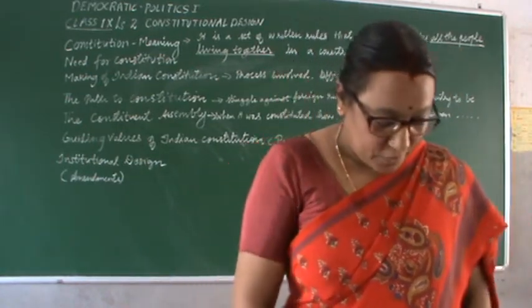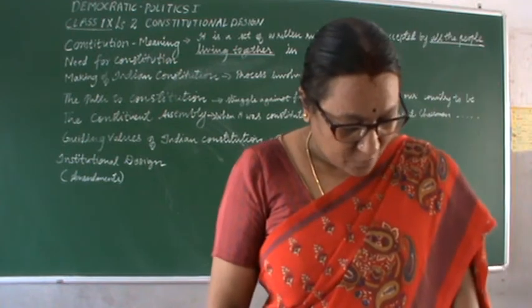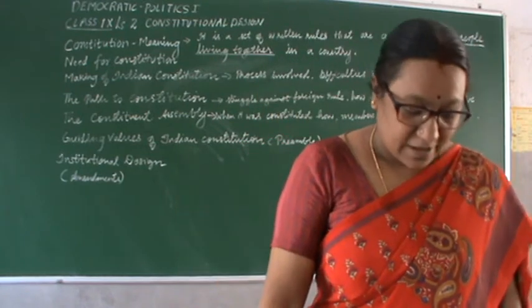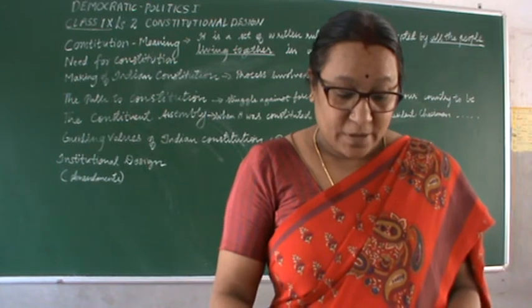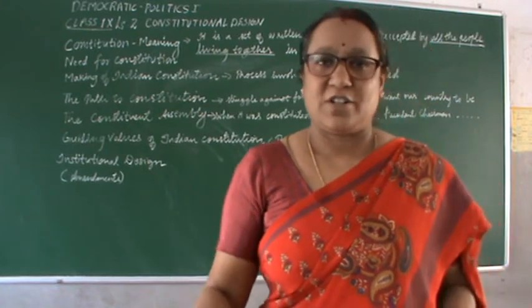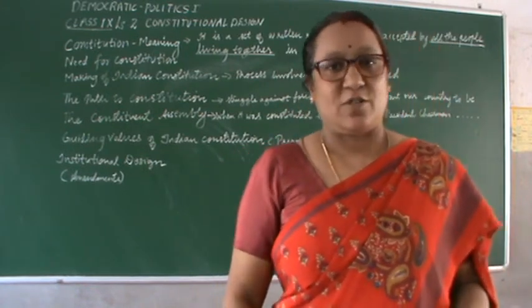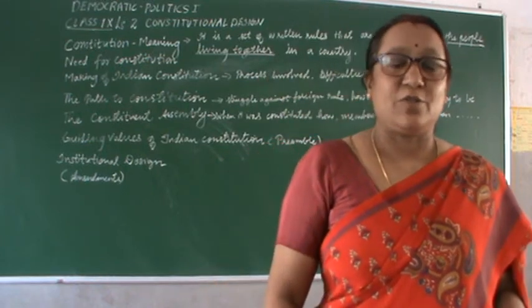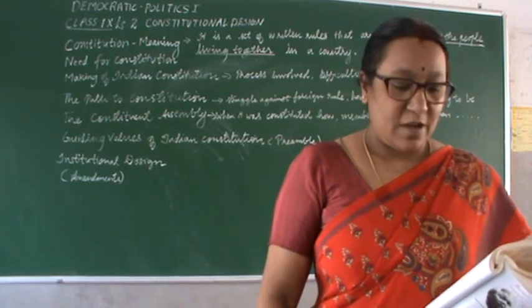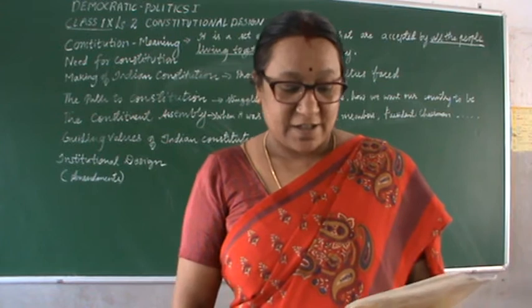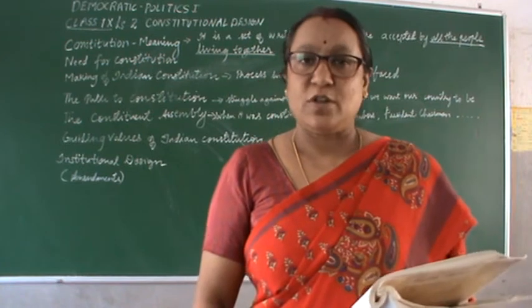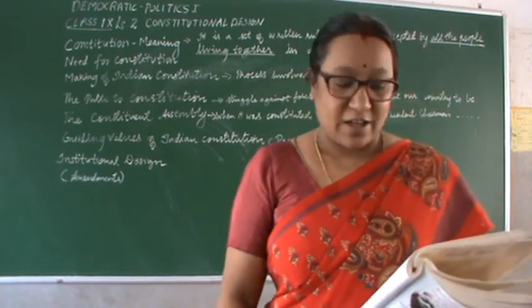Let us look into the overview. In the last chapter we learnt that in democracy the rulers are not free to do whatever they like. There are certain basic rules that the citizens and the government need to follow. All such rules together they constitute the constitution — how the government should function, what are the rights provided, what are the fundamental rights and fundamental duties as a citizen. As the supreme law of the country, the constitution determines the rights of citizens, the powers of the government and how the government should function.